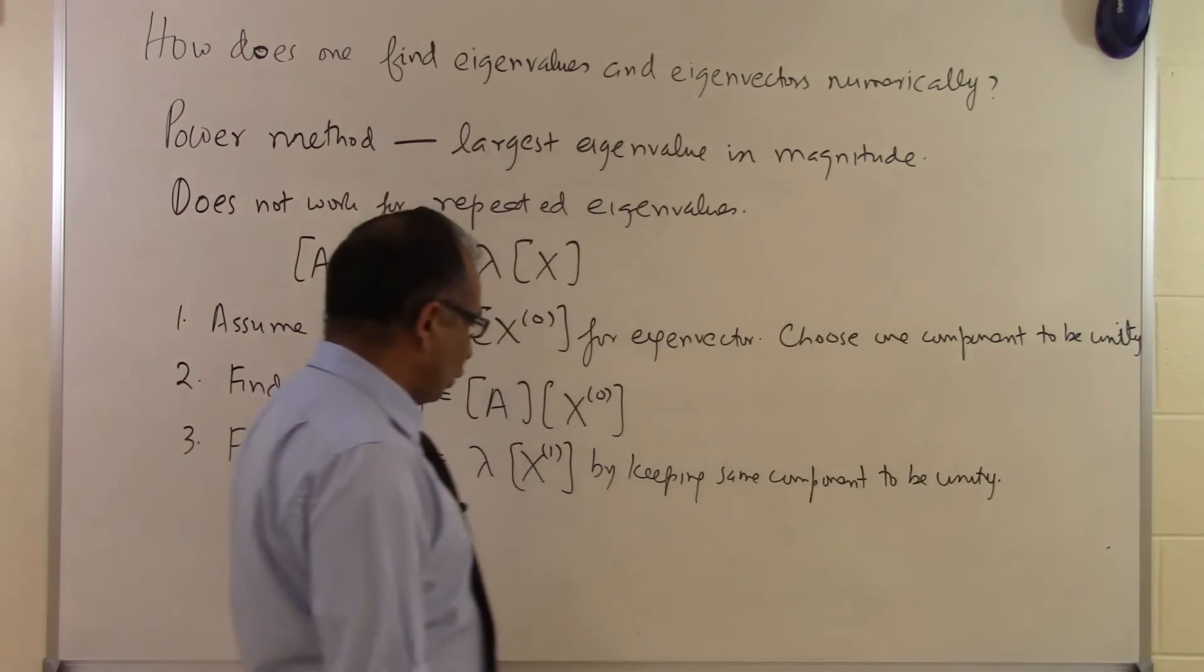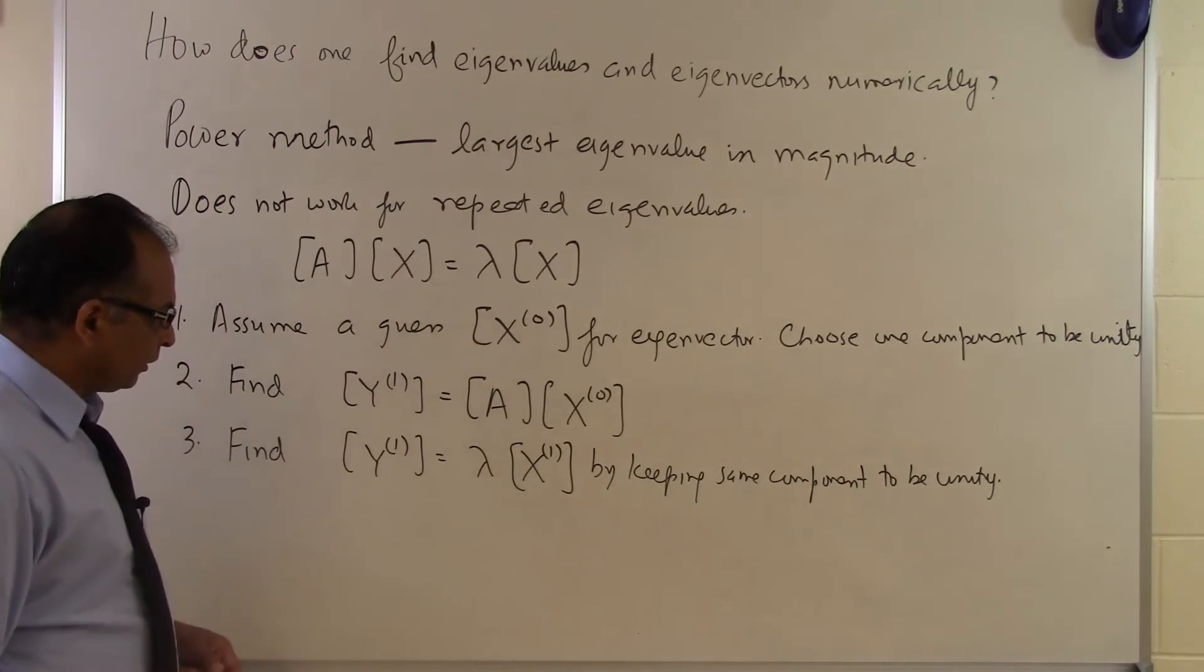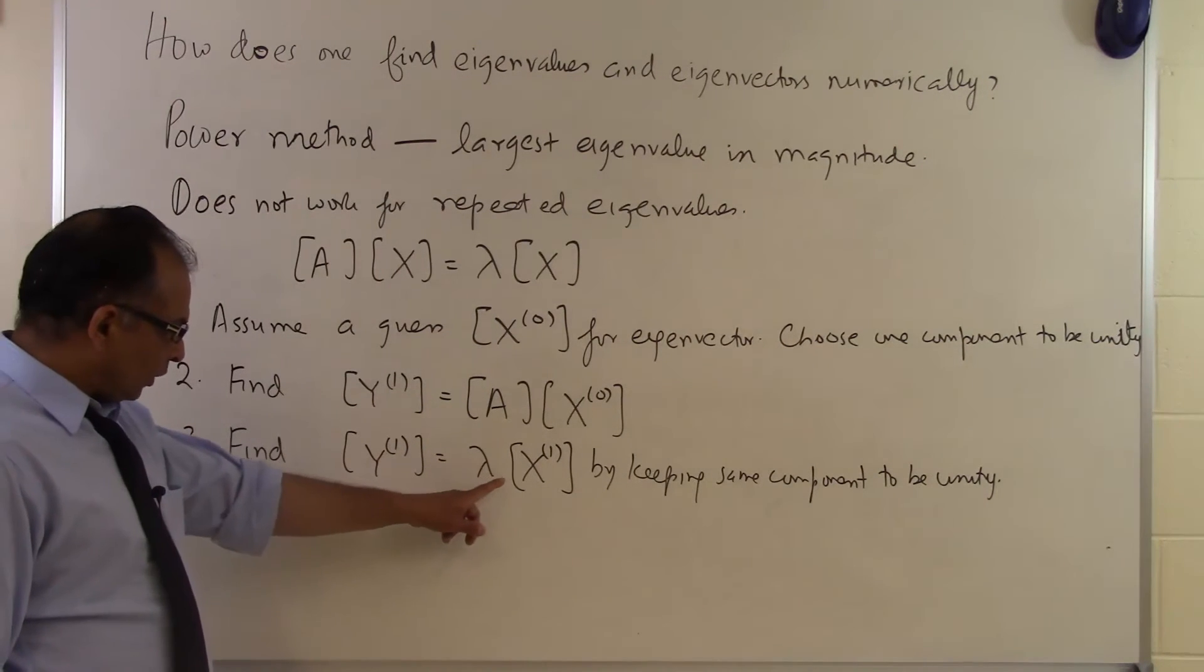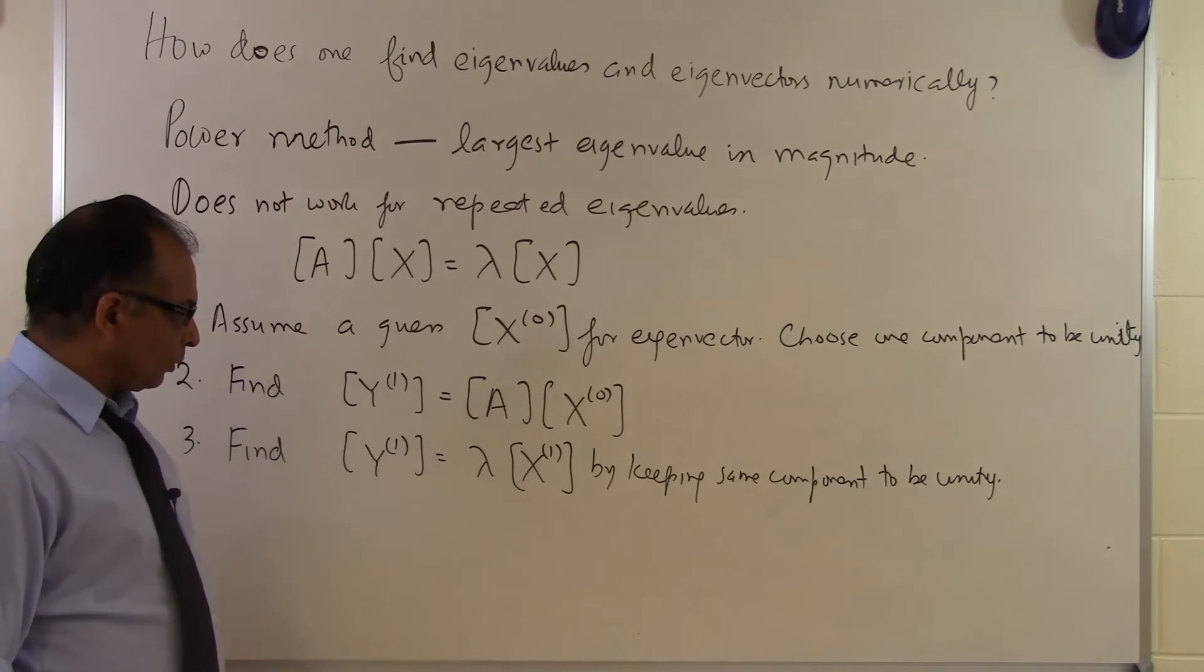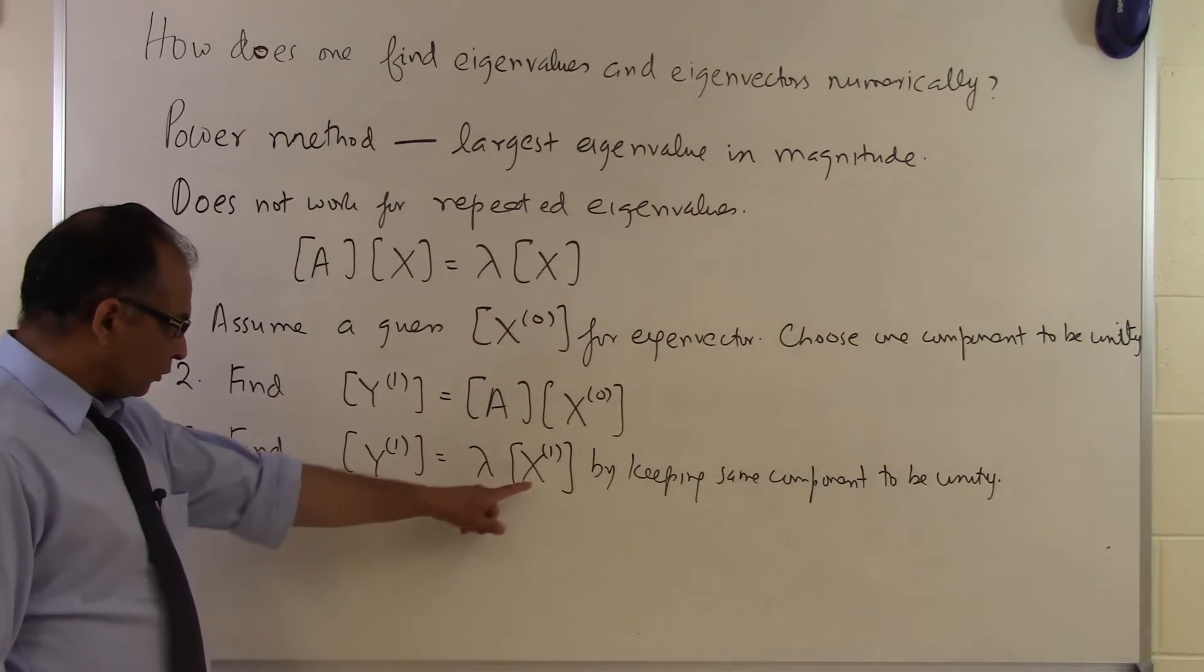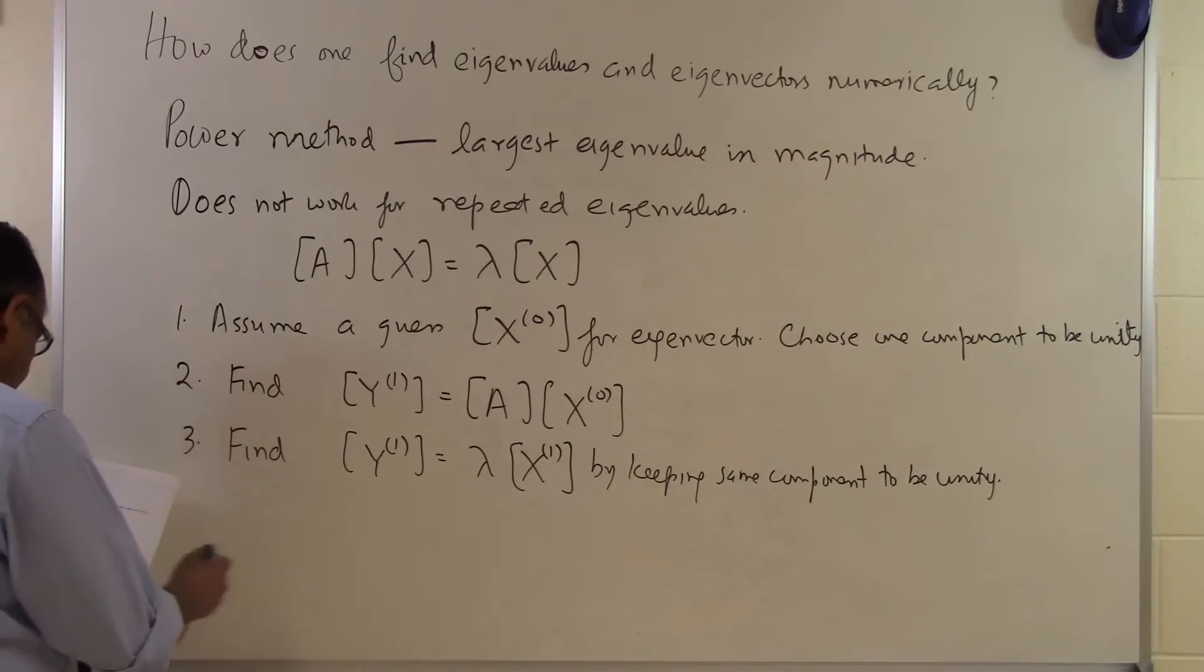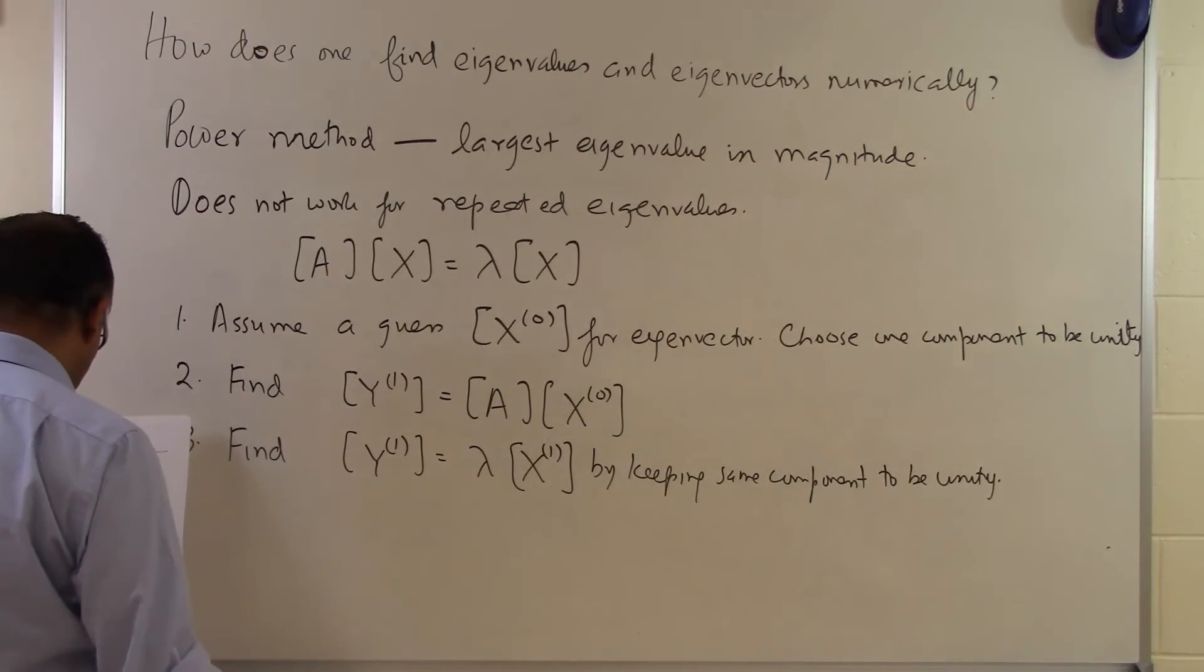The way you do it is by keeping the same component to be unity. Whichever component you chose to be 1, you keep the same one to be 1, and that's how you'll be able to find λ—you multiply by a scalar so that the same component becomes unity. That means you've found the next guess for your eigenvector.